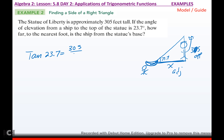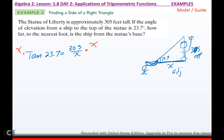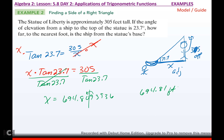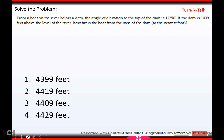Labeling from the angle, opposite is 305 and adjacent is x, so we use tangent again. I set up tangent of 23.7 equals 305 over x. Since x is in the denominator, multiply both sides by x, giving x times tan(23.7) equals 305. Divide by tan(23.7) and you get x equals 694.81 feet. The distance from the ship to the statue's base is approximately 694.81 feet.